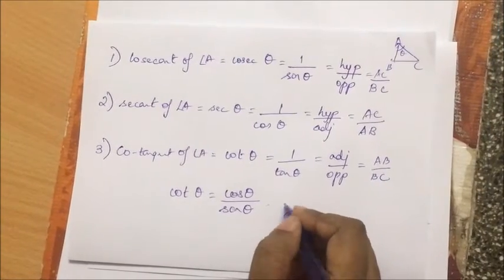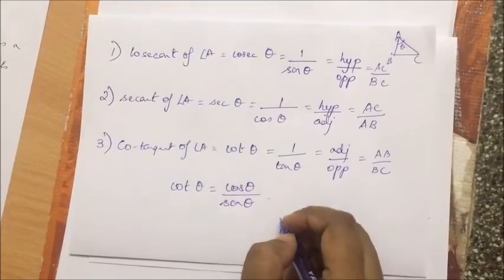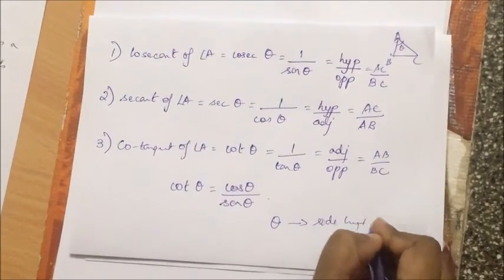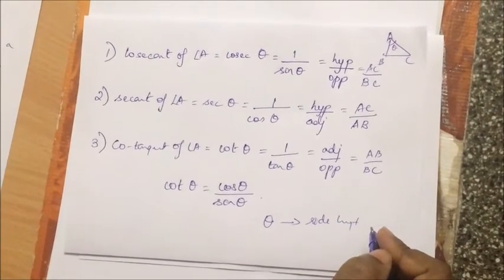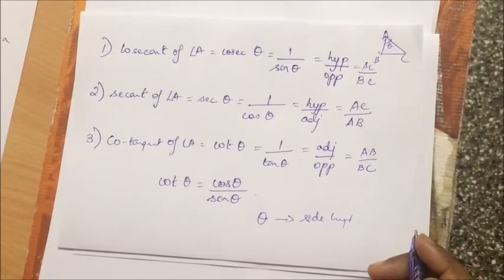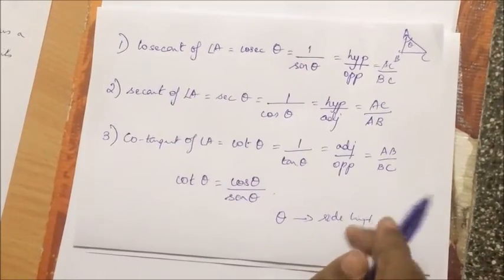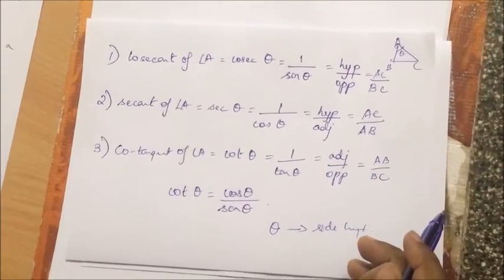Now these ratios actually give a direct relationship between your angle and the side length, which is what trigonometry is all about. It talks about three things: sides, angles, and triangles. That's why it's trigonometry. Problems related to all these ratios will be dealt with in the next video.